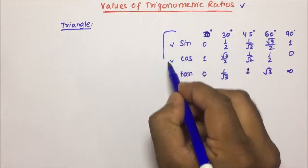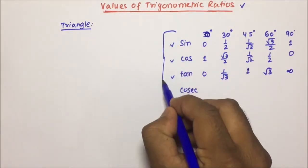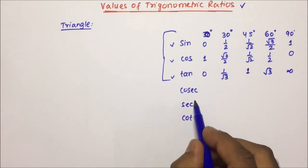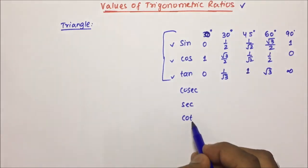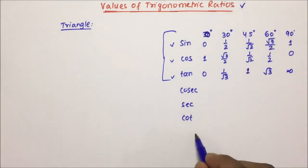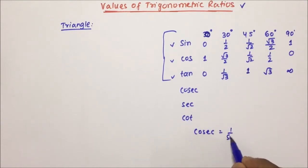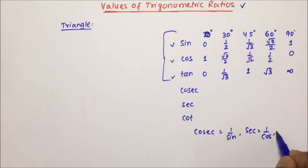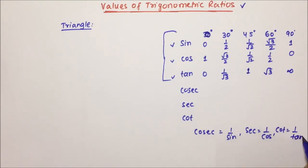If you know these values at least, then you will be easily able to calculate cosec, sec, and cot. Cosec will be nothing but 1/sin, sec will be nothing but 1/cos, and cot will be nothing but 1/tan.